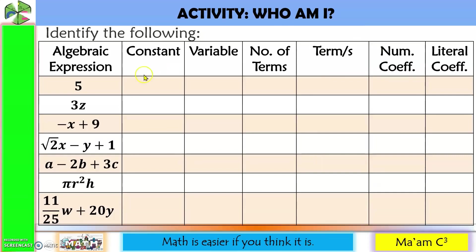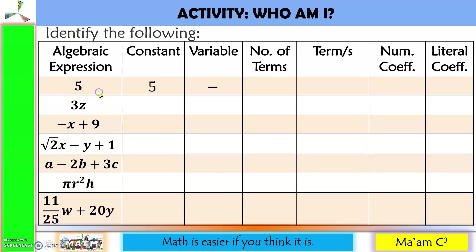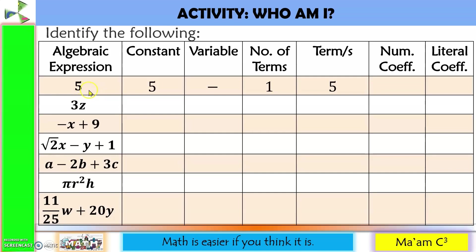Now let's have an activity: who am I? We are going to identify the following from these algebraic expressions. First one: 5 here is a constant. We do not have a variable. We only have one term, and that is 5 itself. We do not have a numerical coefficient because 5 is just a constant here, not combined with any variable. And so we do not have a literal coefficient either.